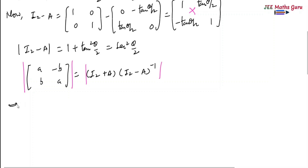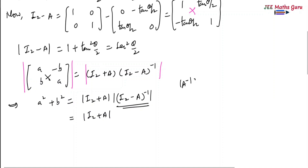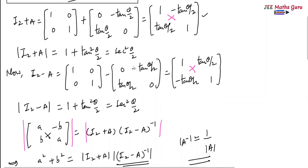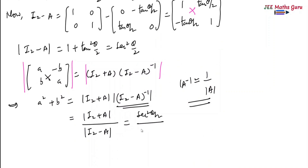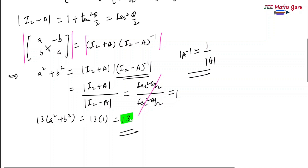The determinant of this matrix — det(A·B) equals det(A) times det(B) — so it separates as det(I₂ + A) times det((I₂ − A)⁻¹). The determinant of A⁻¹ equals 1 over det(A), so det((I₂ − A)⁻¹) = 1 over det(I₂ − A). Both values are sec²(θ/2), so this equals 1. In the question we have to find 13 times (A² + B²), so it is 13 × 1 = 13. So 13 is the correct answer.